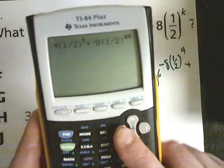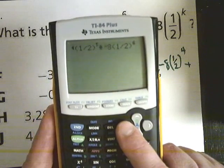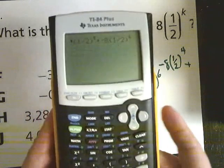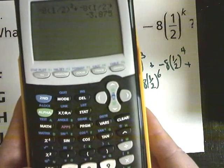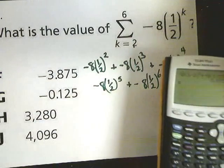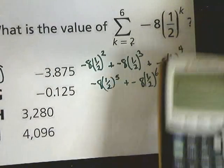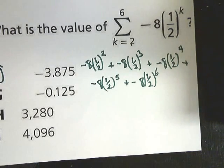So basically I just created a sequence where I have all the parts in there going from 2 to 6. And if I hit enter, it should give me the right answer. And it does, negative 3.875, which is of course F. So that's one way you can do it. You can just write them all out and solve it. Most of the ones they're going to give you on the end of course test are not particularly long, so you should be pretty safe.